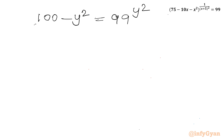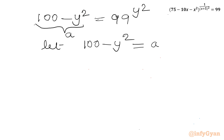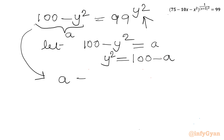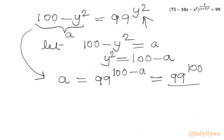Now let 100 minus y² equal to a, so y² equals 100 minus a. Substituting, the left-hand side is a and the right-hand side is 99 raised to the power (100 minus a). Using the exponent property, this becomes 99^100 divided by 99^a. Rearranging, we get a times 99^a equals 99^100.